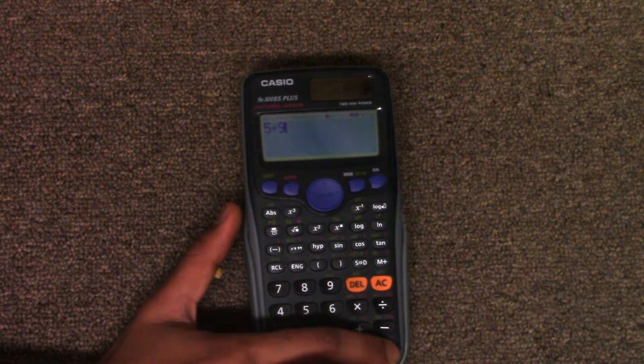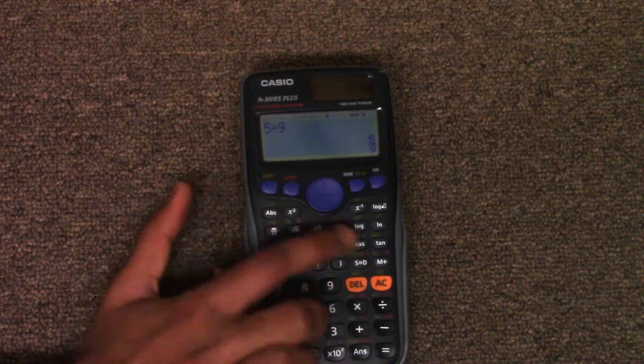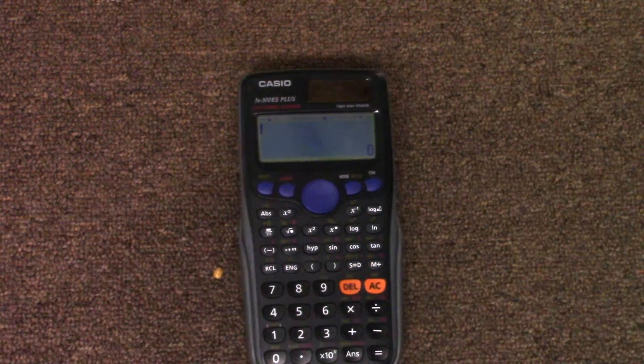Now when you do 5 divided by 9, it shows up as a decimal. And when I pull up the memory, it shows up as 0 instead of 16.